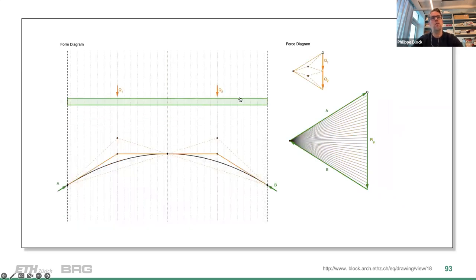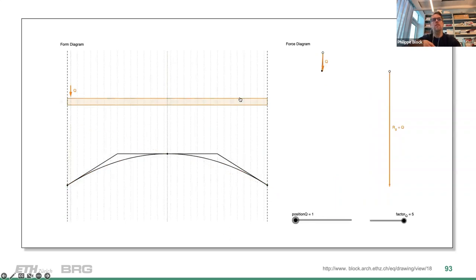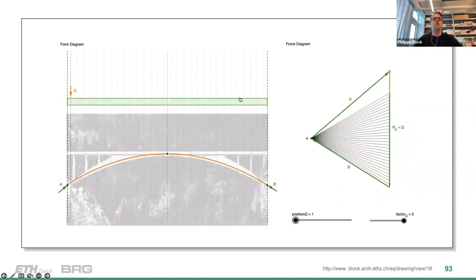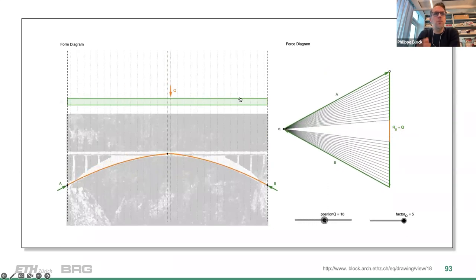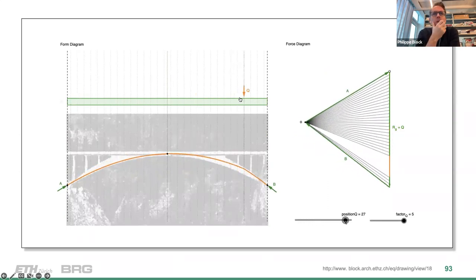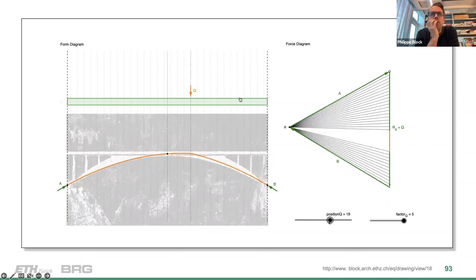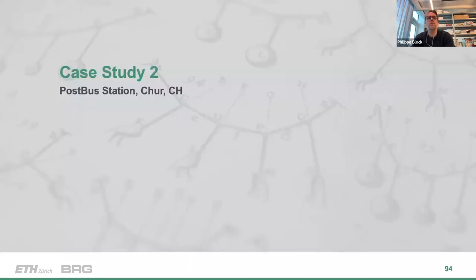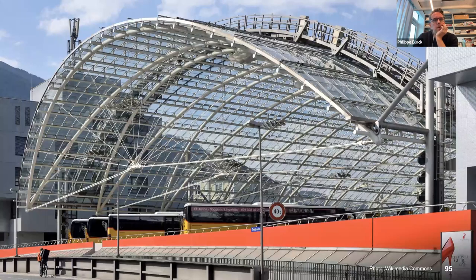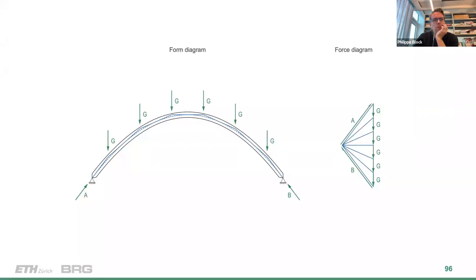On the Equilibrium platform there are interactive graphic statics drawings that allow you to rediscover and redesign this bridge as if you were Maillart. Similarly for the Tower Bridge, you can see that for a loading case combining self-weight and an applied point load, you can find all the solutions fitting inside the structural geometry.